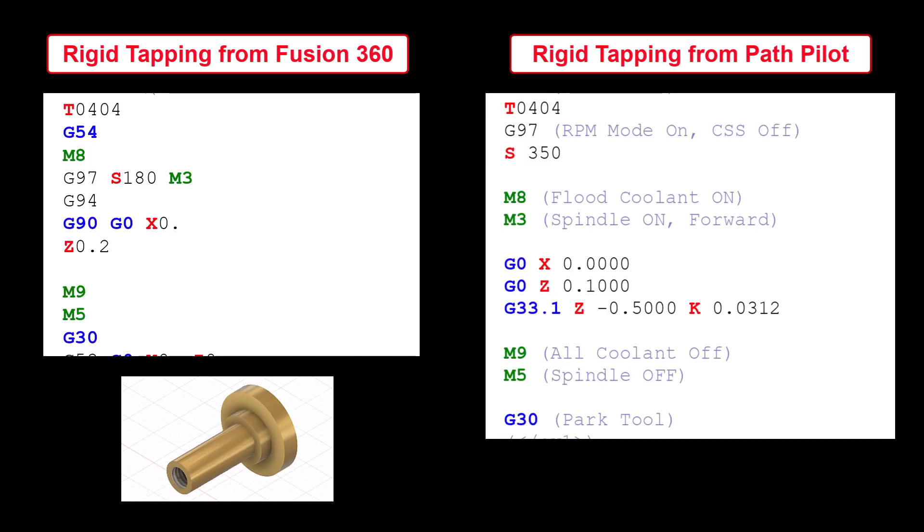The first problem is that the G-code to rigid tap the 10-32 hole did not properly work with the G-code generated by the Fusion 360 software. I am not sure if I did something wrong in my Fusion 360 setup or perhaps the Tormac 8L post processor is not properly designed for rigid tapping.